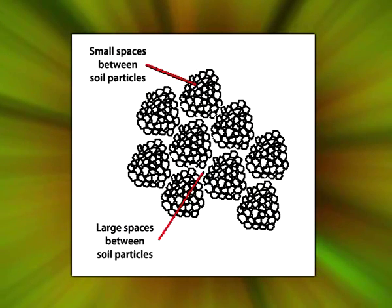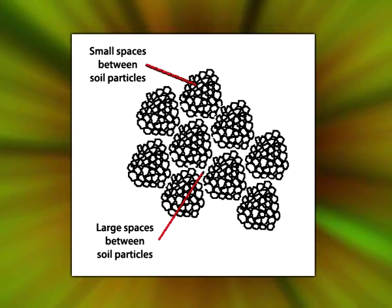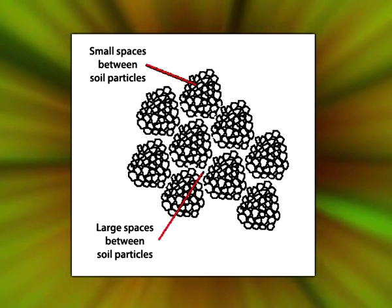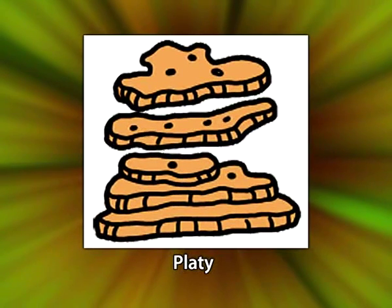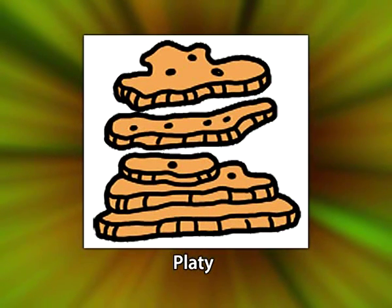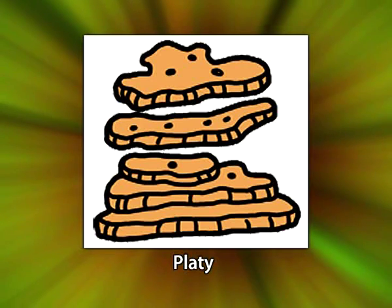In the crumb structure, the aggregates are small, porous and weakly held together. In platy soil structure, the aggregates or units are flat and plate-like. These units are generally oriented horizontally with some degree of overlap, which causes slow permeability. A special form called lenticular platy structure is recognized where the plates are thick in the middle and thinner towards the edges.